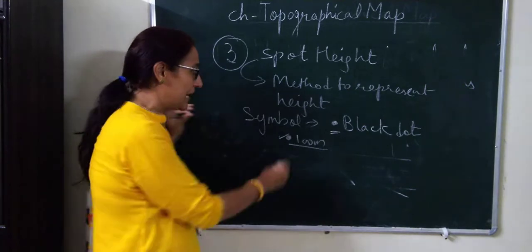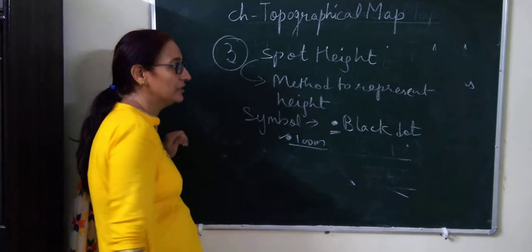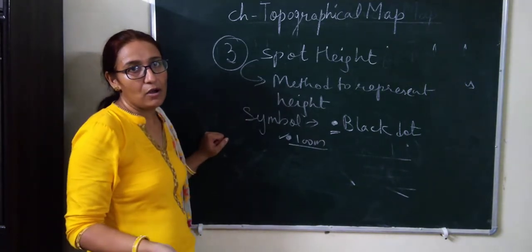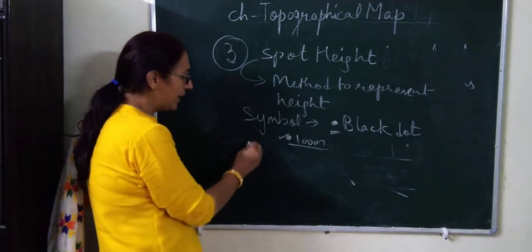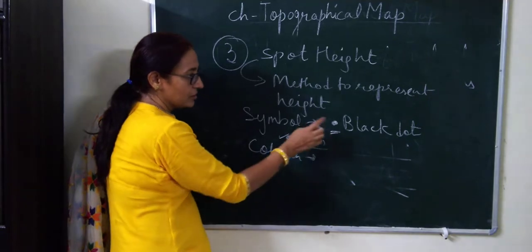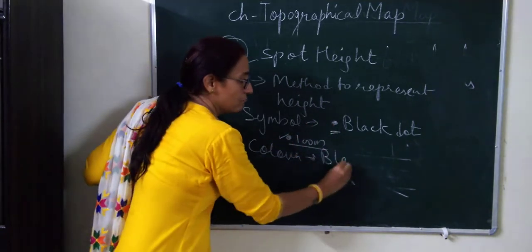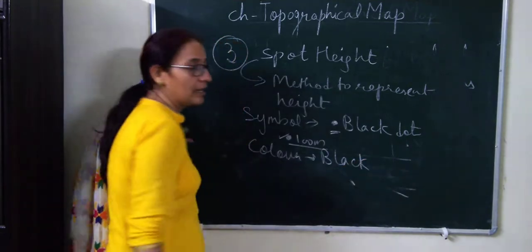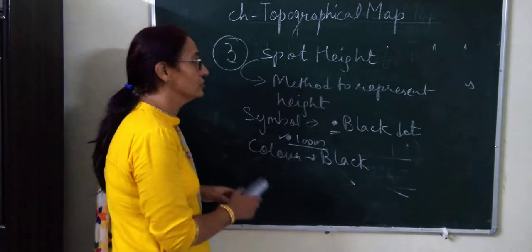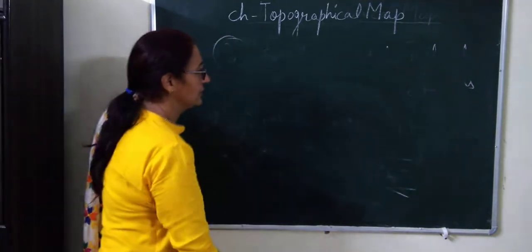To recap: a black dot is the symbol for spot height. Black color is used for this symbol. The spot height is a method to represent the height of a landform or any object on a topographical map, and the height value is written next to the dot.